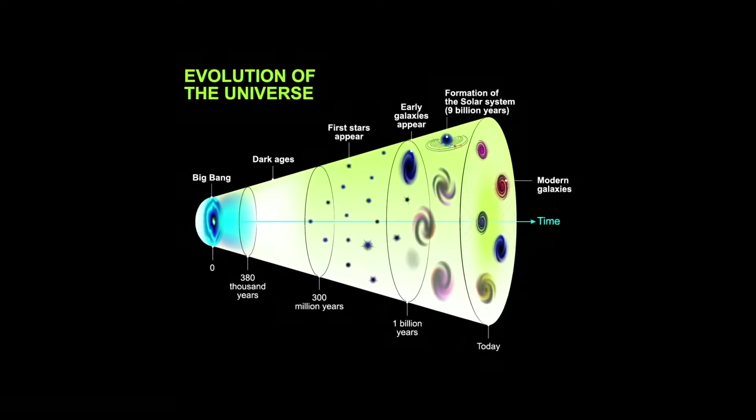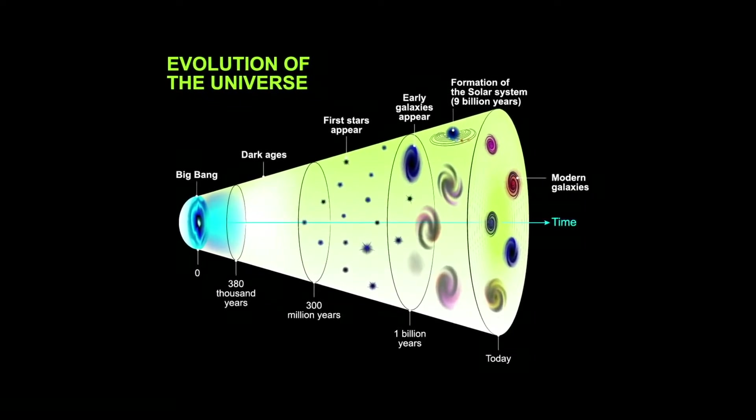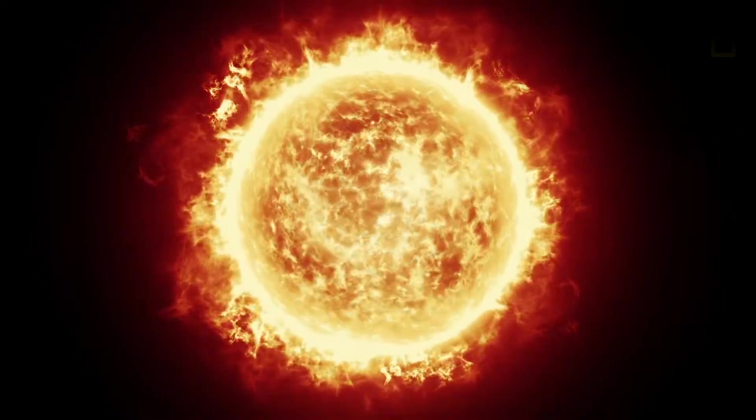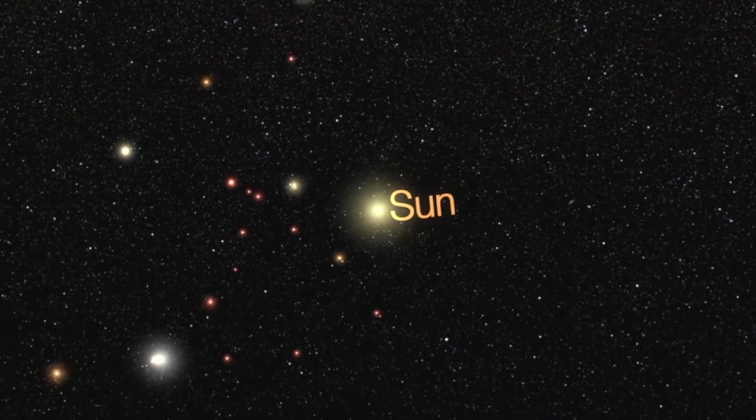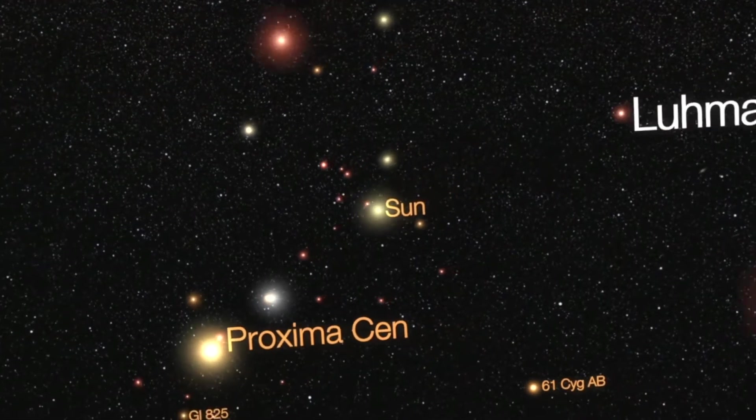And according to the currently accepted models of the cosmos, these early stars were special. For one, they were quite big, somewhere between 30 and 300 times larger than our Sun, and roughly a million times as bright.